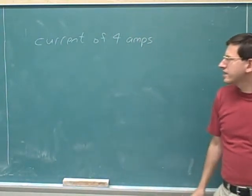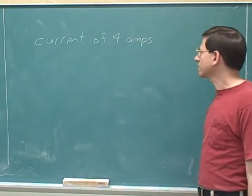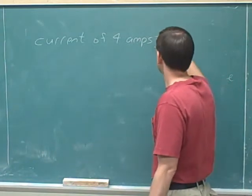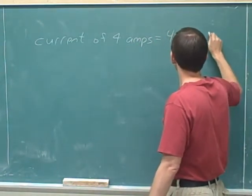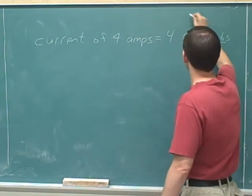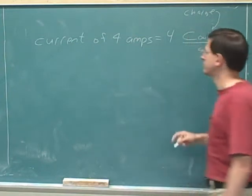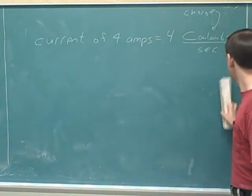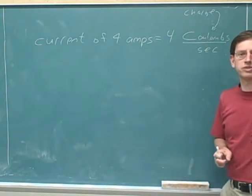Let's say that we're delivering a current of 4 amps. How can we interpret that? Well, it turns out that an amp is a ratio unit, because an amp is Coulombs per second. Remember that Coulombs are a measure of charge. With that information, you should be able to pause the video and articulate what it means if you're delivering a current of 4 amps.